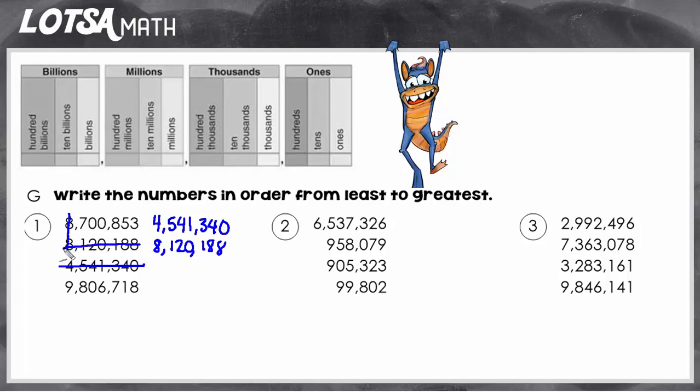So I've used that one. And now this one's going to come next. And the last one is going to be 9,806,718. So now I can see that these numbers are in order from least to greatest.